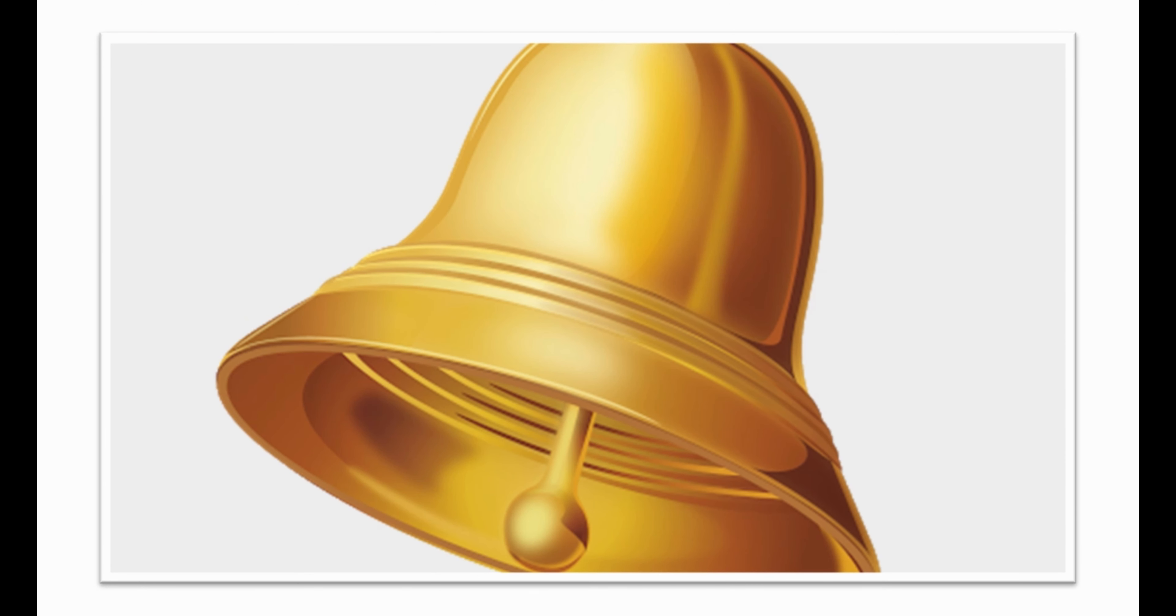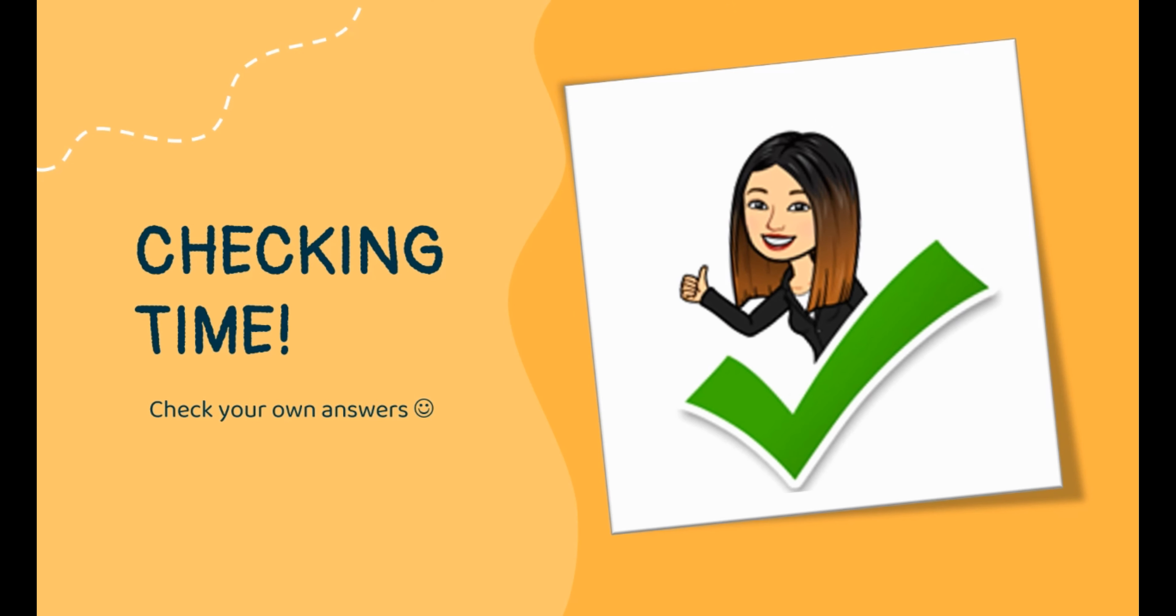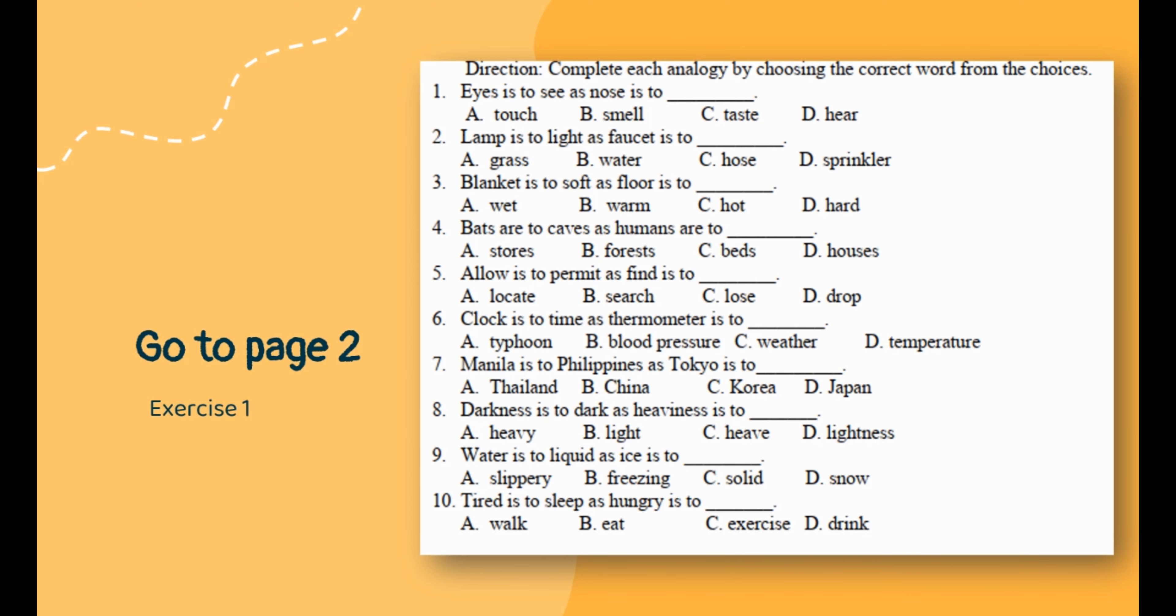It's checking time. Let's see if you were able to answer correctly. Check your own answers. Go back to page two for exercise one. Complete each analogy by choosing the correct word from your choices. Number one: eyes is to see as nose is to smell. Number two: black is to soft as floor is to hard.